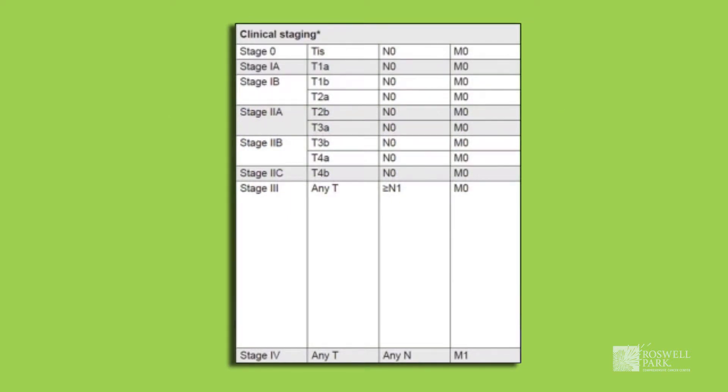The stages for primary melanomas run from 1A to 1B, 2A, 2B, and 2C. So that would be primary melanomas, and each one of those has a sort of an anticipated risk of having lymph node and or distant spread.